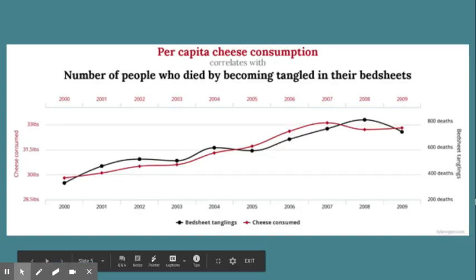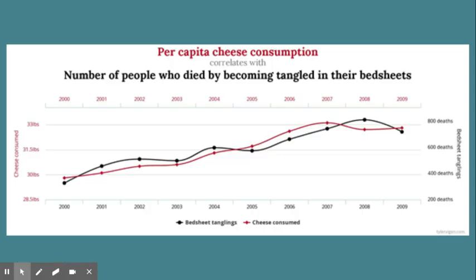Another one: per capita cheese consumption is correlated with the number of people who died by becoming tangled in their bed sheets. People will read this and say, 'The more cheese I eat, the more likely I am to die tangled in my bed sheet.' The data shows that, but does eating cheese cause you to die that way? I don't think so.